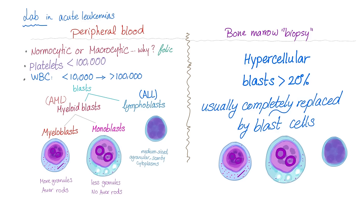Don't forget: acute leukemia means more than 20% blasts in the bone marrow. By definition, acute leukemia is blasts greater than 20% — never forget this.